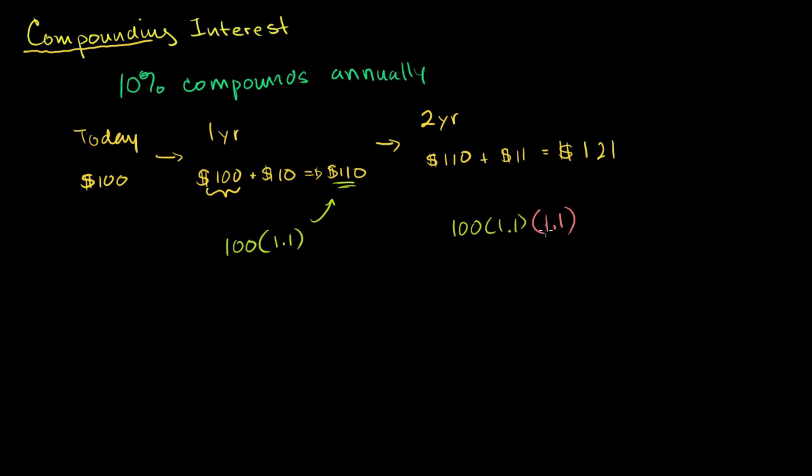And remember, where does the 1.1 come from? 1.1 is the same thing as 100% plus another 10%, right? That's what we're getting. We have 100% of our original deposit plus another 10%. So we're multiplying by 1.1. Here we're doing that twice. We multiply by 1.1 twice. So after three years, how much money do we have? We're going to have 100 times 1.1 to the third power. After n years, we're getting a little abstract here, we're going to have 100 times 1.1 to the nth power.